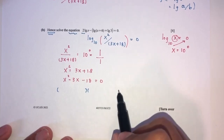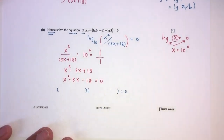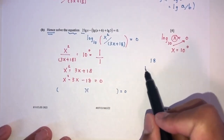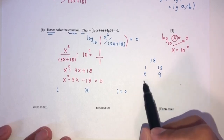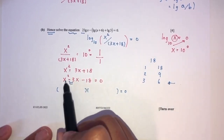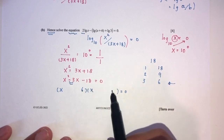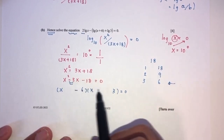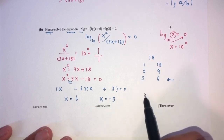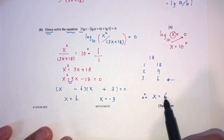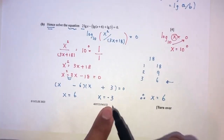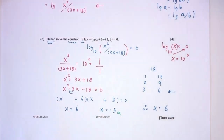We factorize: (x minus 6)(x plus 3) equals 0, giving x equals 6 or x equals minus 3. Since log can only take positive values, x cannot be minus 3. Therefore x equals 6 is the only valid answer for question 2.